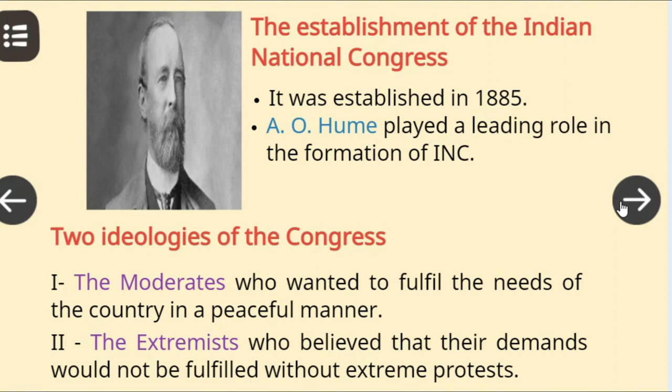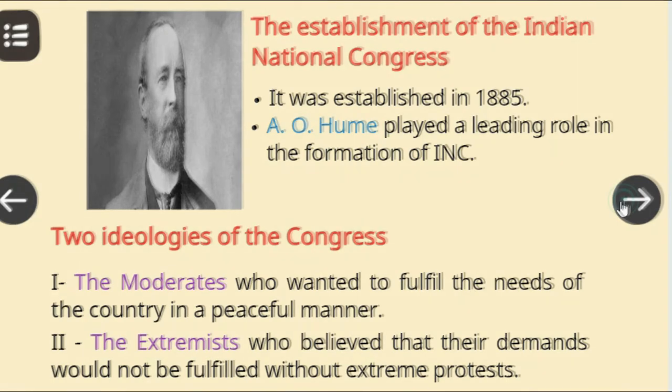Let us talk about the two ideologies of the Congress, yaani ki do vichar dharaayen. The first was the moderates, yaani Naram Dal, who wanted to fulfill the needs of the country in a peaceful manner. And the other was the extremists, Garam Dal, who believed that their demands would not be fulfilled without extreme protests.